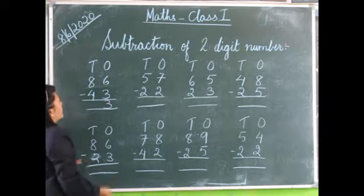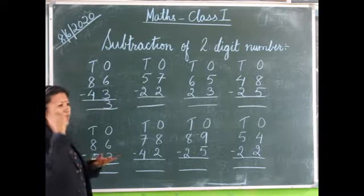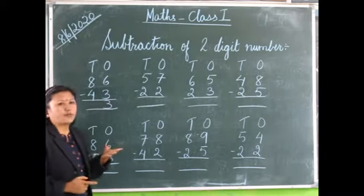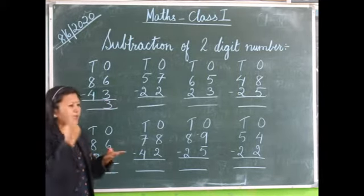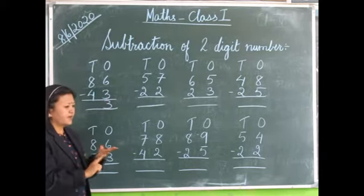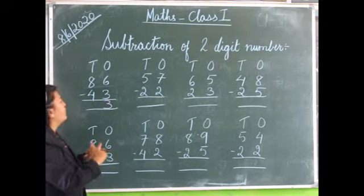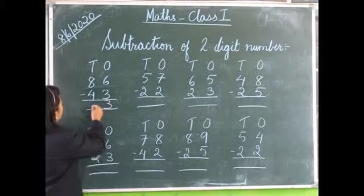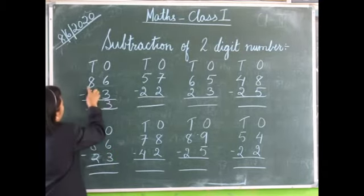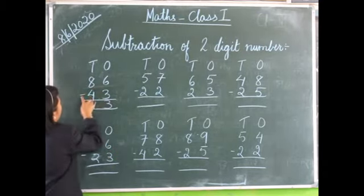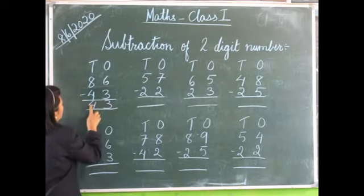Now eight minus four. Eight on the head, four in our fingers. We count backwards: eight, seven, six, five, four. Therefore, 86 minus 43 is equal to 43.